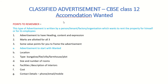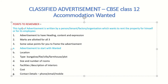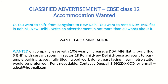The third format is 'Accommodation Wanted.' This type is written by a person, tenant, factory, or organization that wants to rent property for themselves or their employer. If you are moving to a new city and need a place to live, you write this ad. The three marking criteria remain the same. The advertisement starts with the word 'Wanted,' and value points — location, type of house, size, number of rooms, facilities, cost, and contact details — all remain the same.